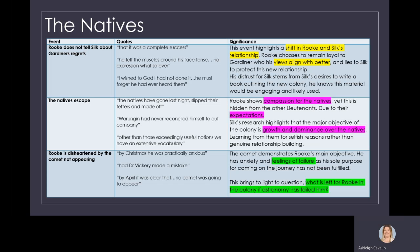Let's look at the natives. In the end of this section, there is a scene between Rook and Silk. Rook does not tell Silk about Gardiner's regrets and everything that Gardiner has said about the kidnapping. This highlights a shift in Rook and Silk's relationship. Rook chooses to remain loyal to Gardiner, who has more similar views with Rook. He lies to Silk to protect this new relationship and to protect Gardiner. His distrust for Silk stems from Silk's desires to write this novel outlining the new colony. He knows that any material he provides to Silk would likely be engaging and used in the novel. In addition, Silk is also a social climber. He may use Gardiner in order to advance his own position. As such, Rook keeps the secret.